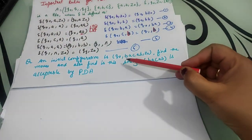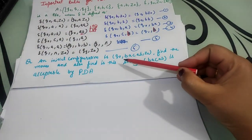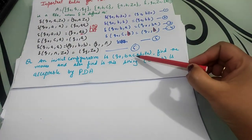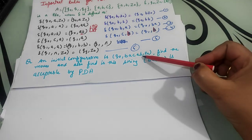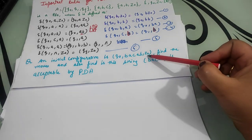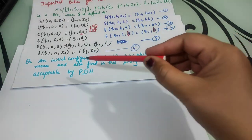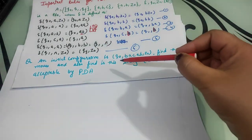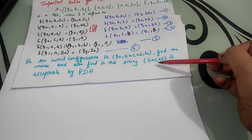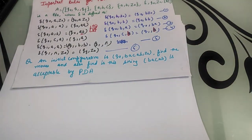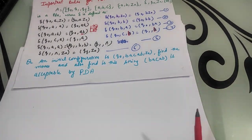The initial configuration is: q0 with the string 'b a c a b' and z0 representing the stack. Find the moves and also find whether the string 'b a c a b' is acceptable by the pushdown automata or not.